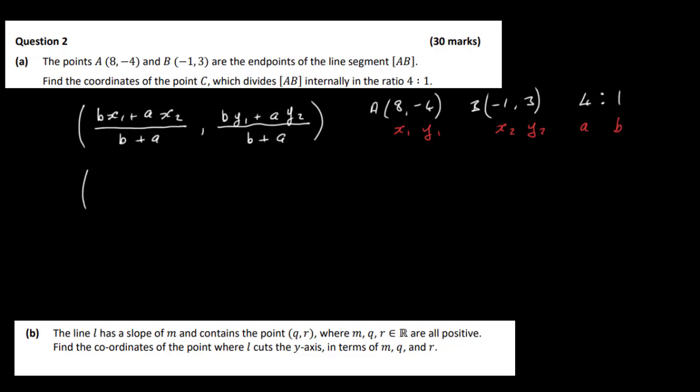So we have B which is 1 times X1 which is 8 plus A which is 4, X2 which is -1. That's all over B plus A so it's going to be 1 plus 4. And same thing over here we've got 1 times Y1. Well Y1 is -4 plus A which is 4, Y2 which is 3, and then that's all divided by 1 plus 4. So let's just work all of this out. So we've got 8 minus 4 on the top so that's 4 and we've got 5 on the bottom. Over here we've got -4 plus 12 so that's 8. So here we've got 8 over 5 and that's it.